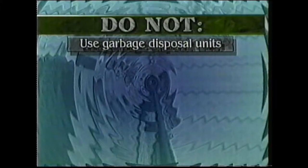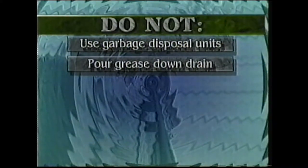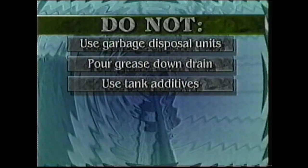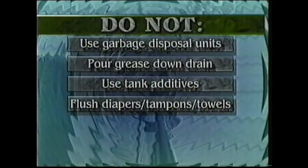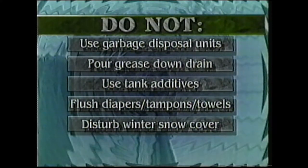Avoid the use of garbage disposal units. The bacteria in the tank will not easily digest the waste generated by these units, and they place added demand for sludge storage space in the septic tank, thereby reducing retention time. This can result in the carryover of suspended solids, which can clog the system. Do not pour grease, solvents or strong chemicals down the drain, as this kills bacteria which are essential for sewage treatment. Tank additives are not needed and can actually create problems by causing solids to be carried into the absorption system. Items that do not readily decompose, such as diapers, tampons or paper towels, must not be disposed of by flushing. In the winter, it's important to keep as much heat in the system as possible. Snow cover provides excellent insulation, so avoid disturbing this insulating layer — it may be a good idea to fence this area off.